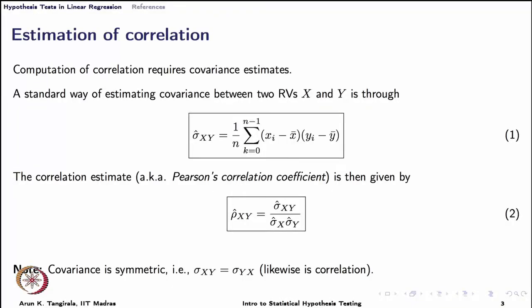If you recall from earlier lectures in this course, we have defined theoretically what correlation is. Correlation is standardized covariance. Therefore, estimation of correlation will first require estimation of covariance. We have earlier seen how to estimate variance, where we talked about two different estimators: one which we called S-squared-n and the other S-squared-n-minus-1. The difference between those two was that while one was unbiased, the other was biased, but the one with 1/n was more efficient than the unbiased estimator which had 1/(n−1) as the factor.